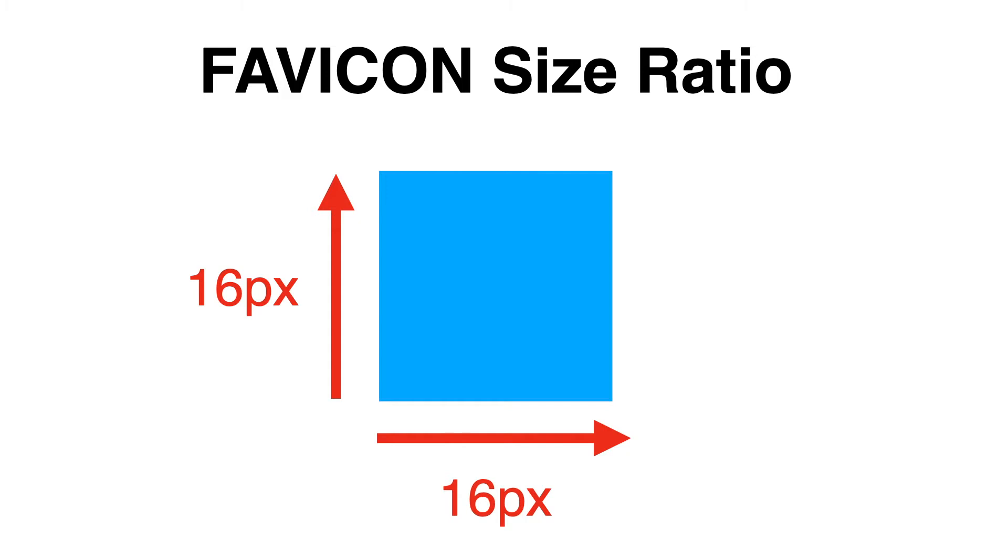The standard size of a favicon is 16 pixels by 16 pixels, so it is highly recommended that your logo should be at least a perfect square at 16x16 pixels. You can also create a favicon at a higher pixel resolution so that when it's compressed down to 16x16 it looks crisp, clean, and clear.